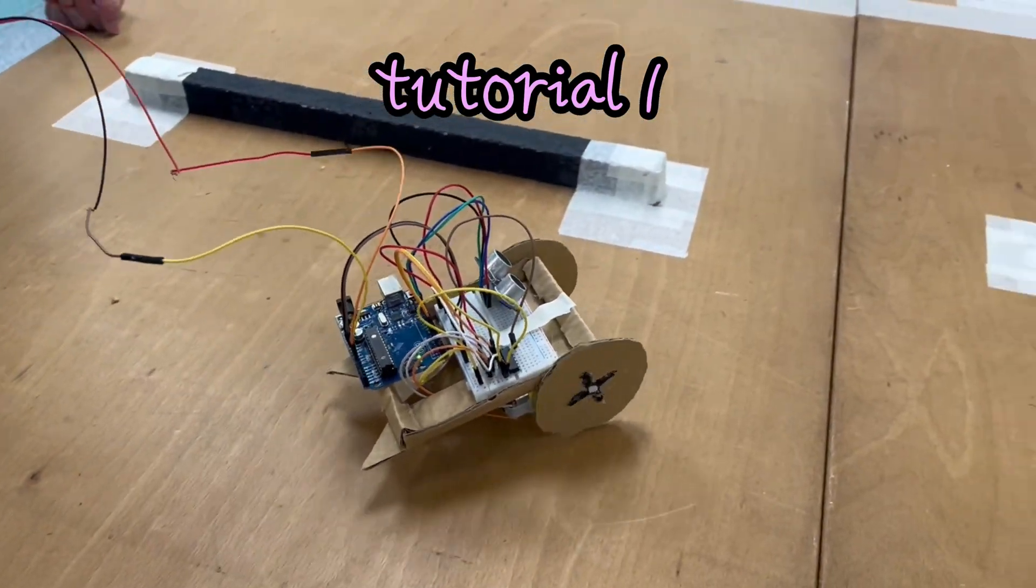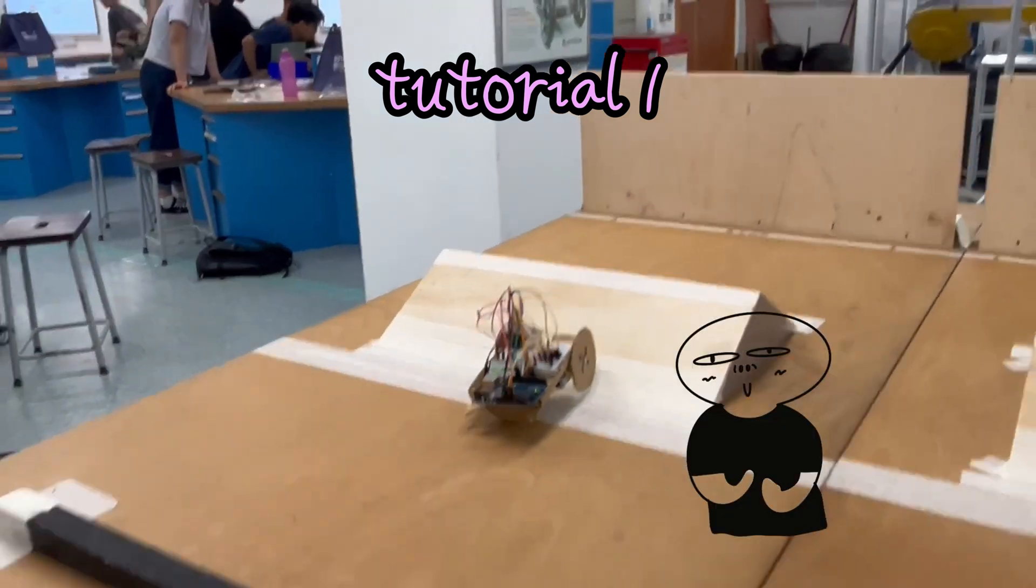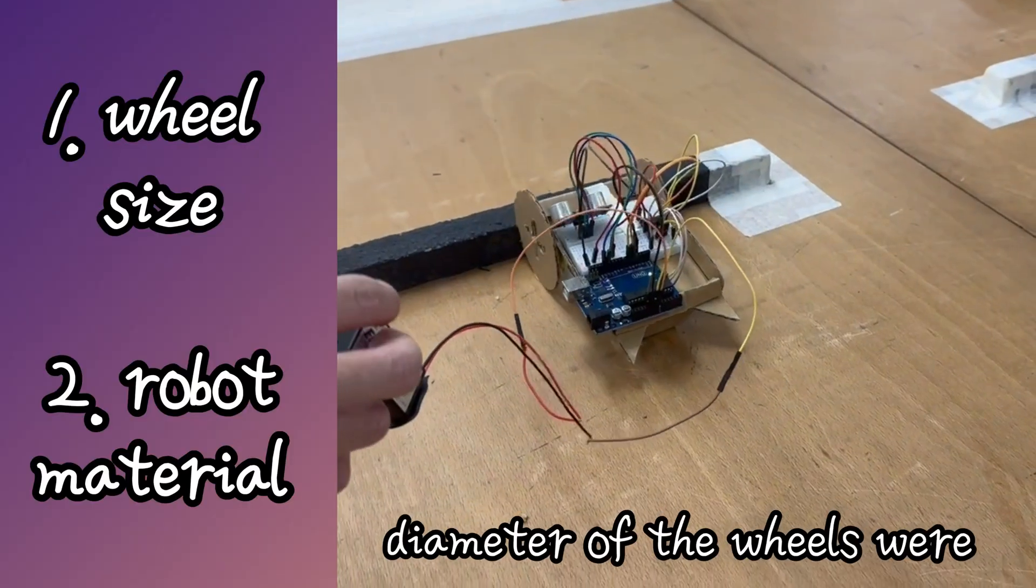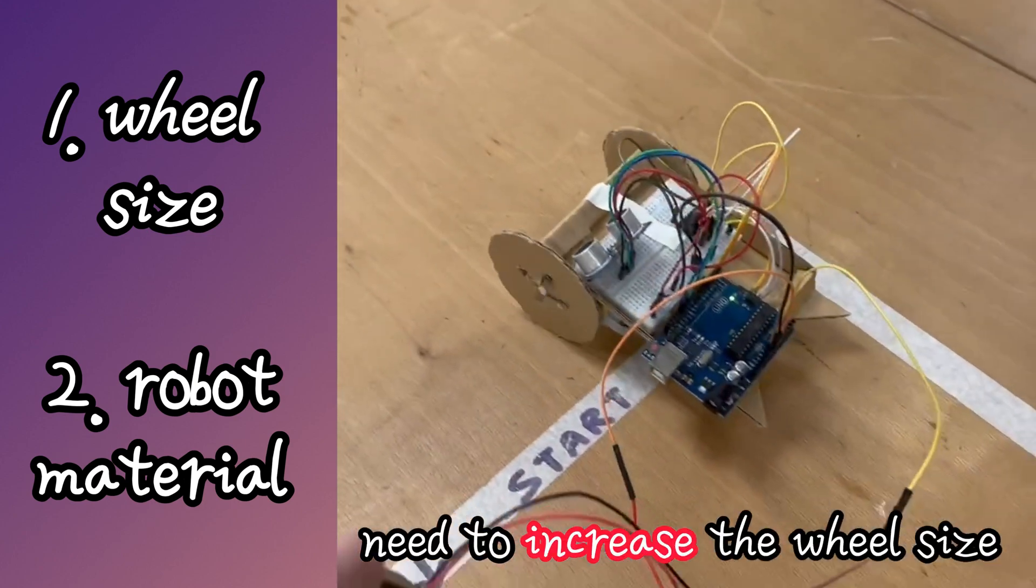In tutorial 1, we built our template robot and it was clear that there are many areas for improvement. We realized the diameter of the wheel was almost as high as the first bump, so there was a need to increase the wheel size.